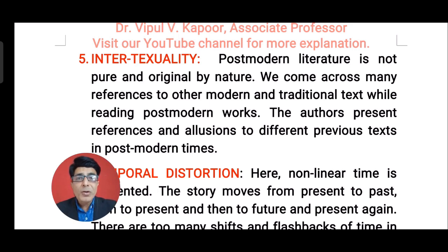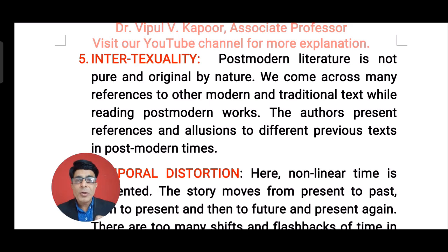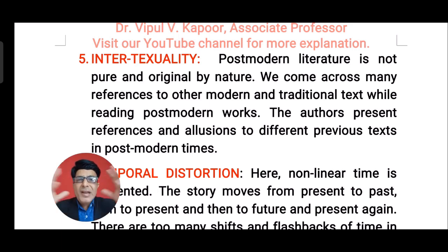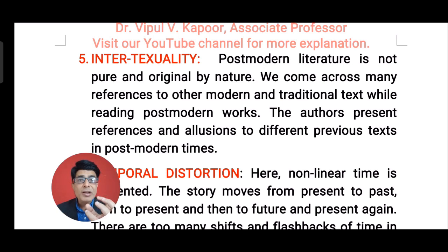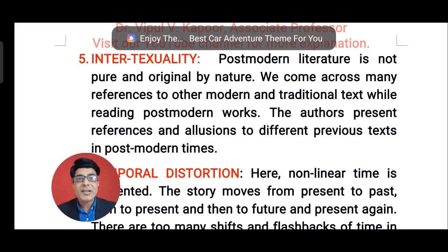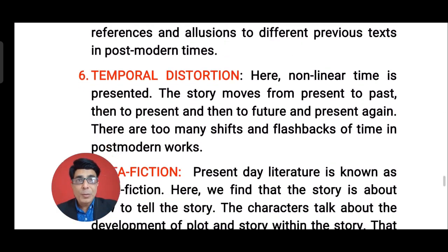Another important feature of postmodern literature is intertextuality. In postmodern literature, we do not find the element of originality — today's literature is not pure and not original. We come across many references and allusions from other texts. As with pastiche, authors copy and paste from other works of art. As a result, today's text is not a pure original text; it is actually a mixture of so many texts, and it is therefore known as intertextual. The authors present references from different texts in postmodern times.